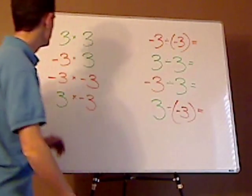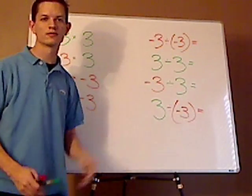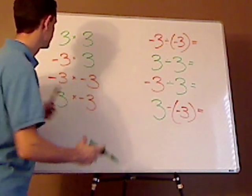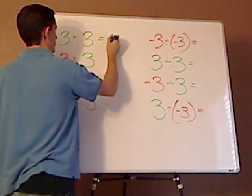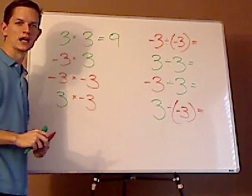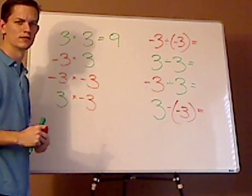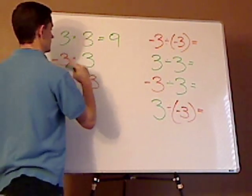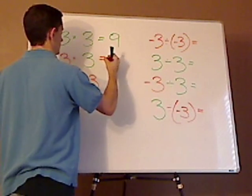So, let's go over these. You have 3 times 3. What's 3 times 3? Yeah, it's 9. Now, what would be a negative 3 times a positive 3? That would be a negative 9.